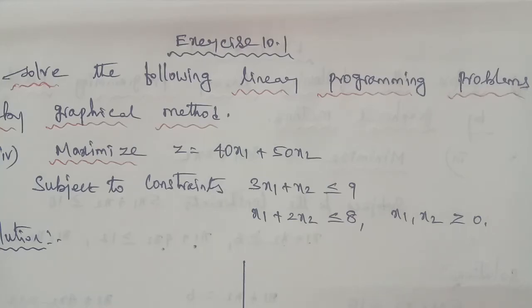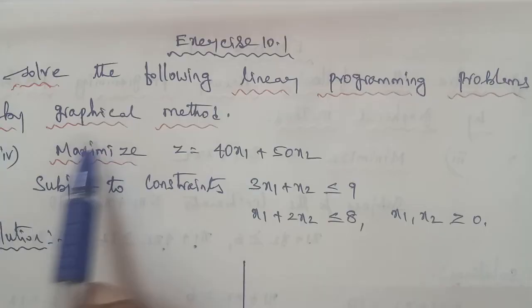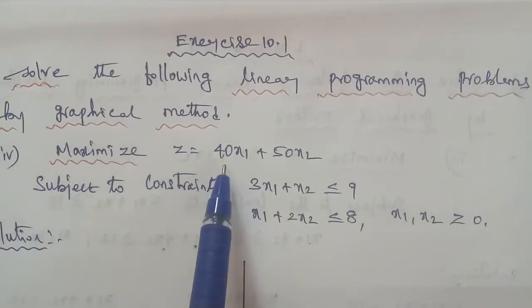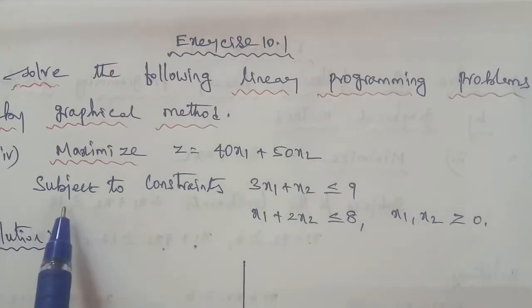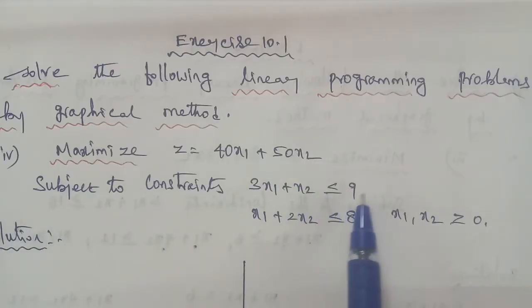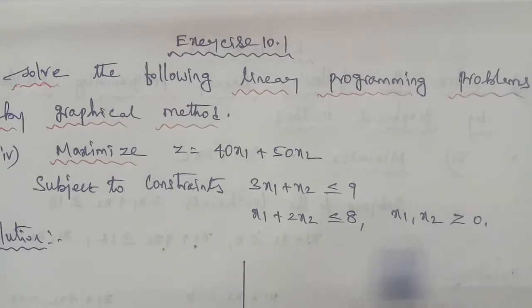Hi students, I am Gopinath. 11th Business Math, Exercise 10.1, question number 4. Solve the following linear programming problem by graphical method, sub-question 4. Maximize Z is equal to 40x1 plus 50x2, subject to constraints: 3x1 plus x2 less than or equal to 9, x1 plus 2x2 less than or equal to 8, x1 comma x2 equal to 0.